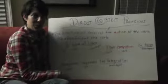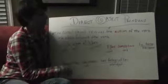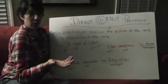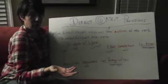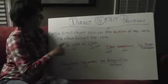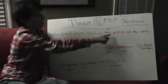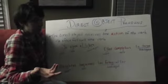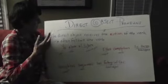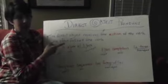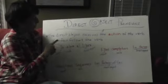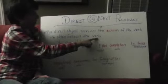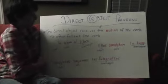Hola chicas y chicos, y muy buenos días. Hoy vamos a hablar de direct object pronouns. In order to use a direct object pronoun, first we've got to figure out what the direct object is. The direct object receives the action of the verb. It's pretty easy — we do it in English all the time. And it almost always follows the verb, in English and in Spanish.